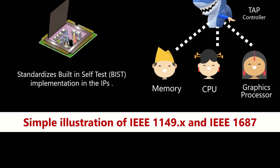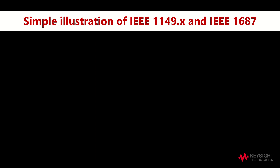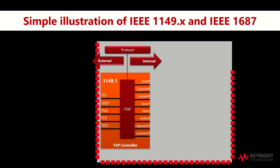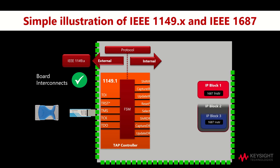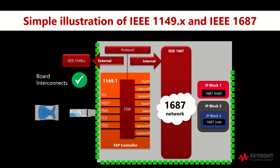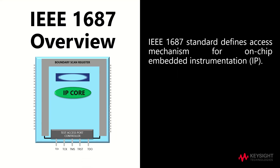By integrating both IEEE 1149.x and IEEE 1687 into the boundary scan analyser, it can allow both external and internal access. The IEEE 1149.x will test for the board interconnects on the PCBA, whereas the IEEE 1687 ensures a form of standardisation between IP blocks of a silicon chip. This also ensures the capability to test internal IPs within the board application environment as compared to the chip test environment. All in all, the IEEE 1687 standard defines access mechanism for on-chip embedded instrumentation.